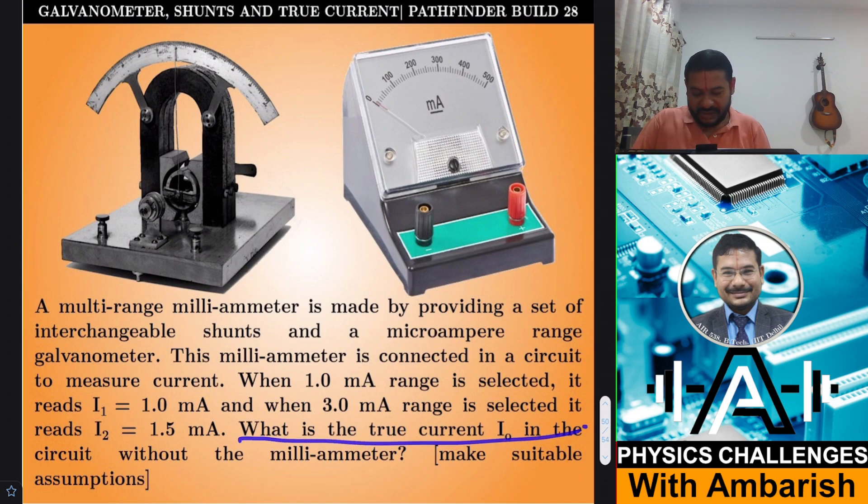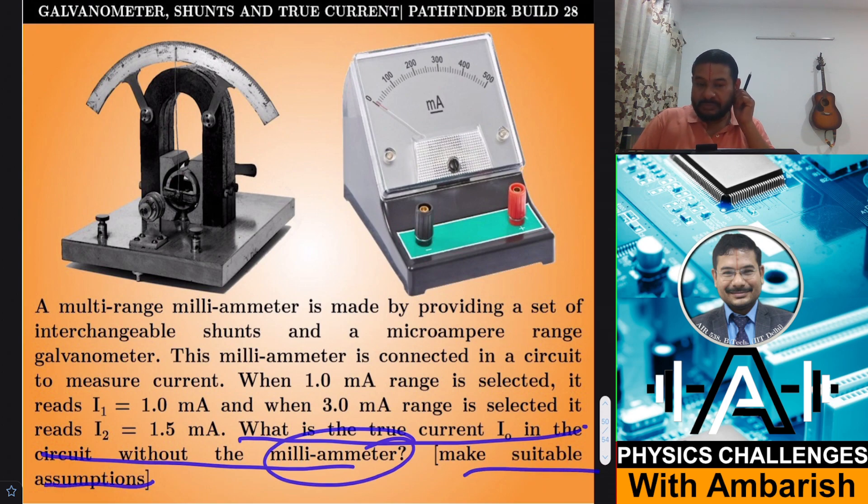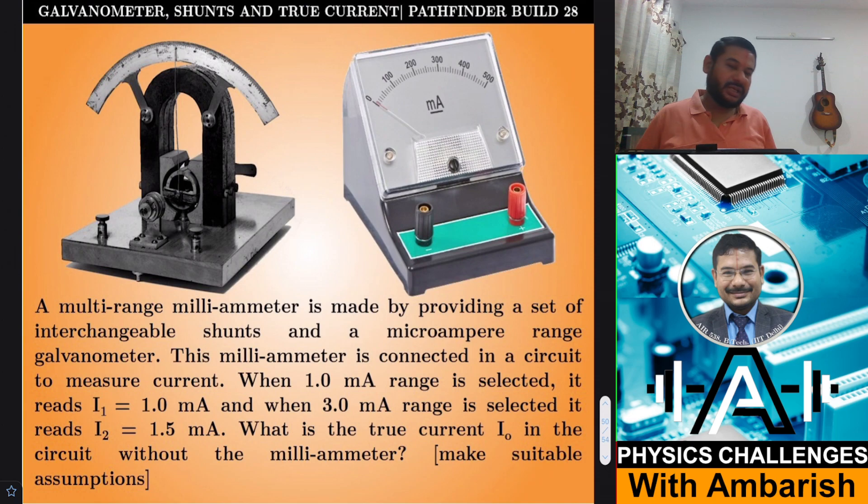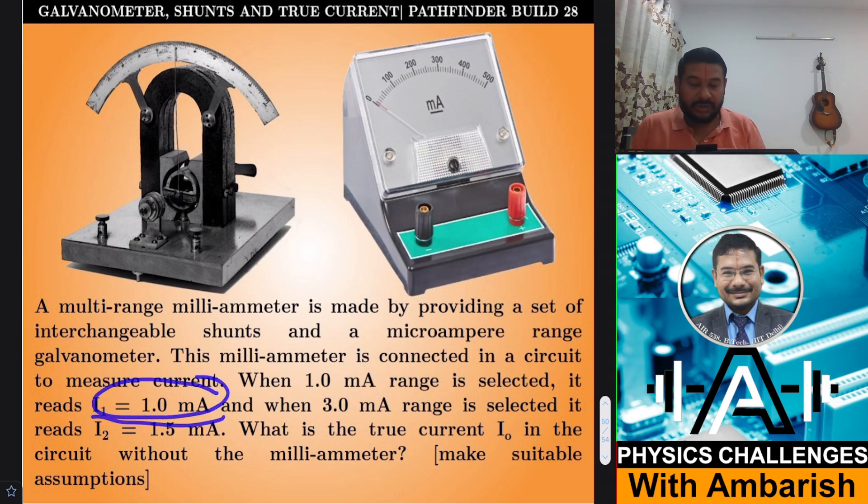What is the true current in the circuit without the milliampere meter? Make suitable assumptions. So you know that when we shunt a galvanometer we can change its range. We have first of all converted into 1 milliampere range and then the reading itself was the full scale deflection. In the second case when we change the shunt to make the range 3 milliampere the reading changed to 1.5 milliampere.